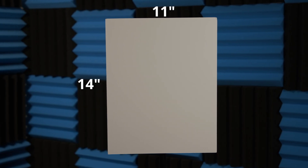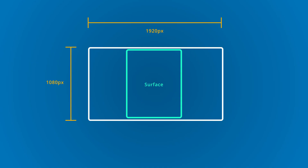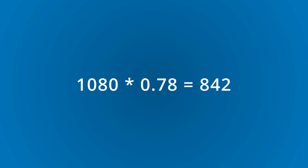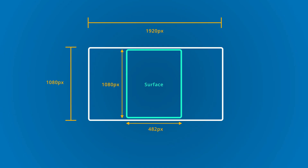Now let's look at a surface where the width and the height are different. This rectangle measures 11 inches wide by 14 inches tall. Once again, we can draw our projector's output and put our surface inside of it. We can pretty easily see that the height of the surface will be 1080 pixels once again. However, it is not immediately apparent what the width should be. To get this number, we need to find the ratio between the height and the width of the surface. To do this, we take the width of the surface and divide it by the height, which will equal 0.78. Now, we can take the number of pixels we found for the height and multiply it by 0.78, which equals 842 pixels, which will be our desired width for the surface. Together, we know that the resolution of the surface will be 842 by 1080.